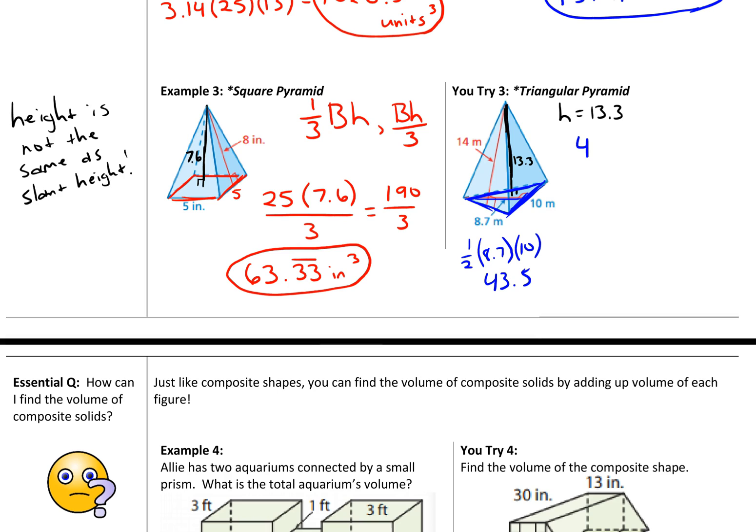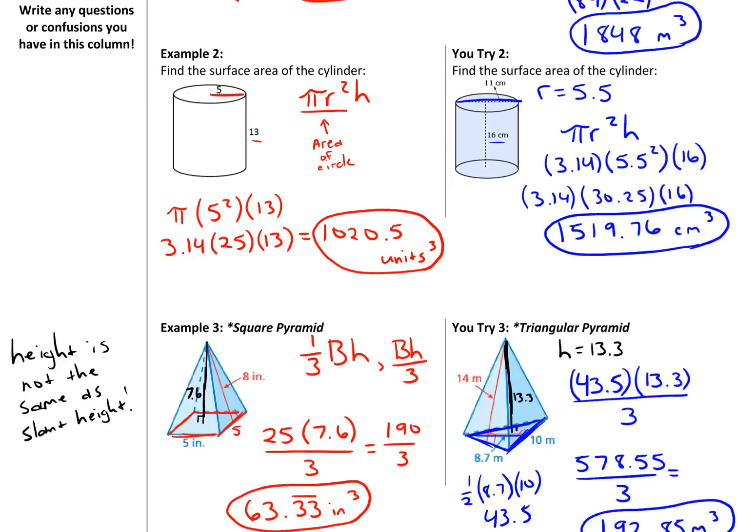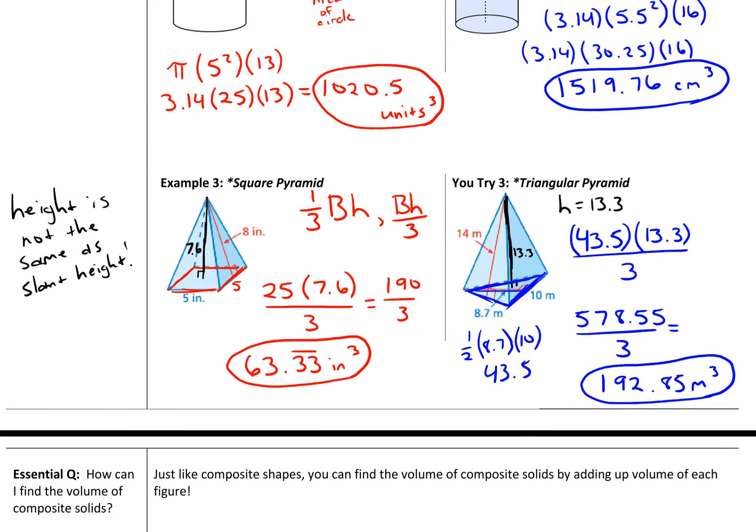So there's our base area, 43.5 times your height, 13.3. We're going to divide that by 3. 43.5 times 13.3 is 578.55. And if we divide that by 3, you get a final answer of 192.85 meters cubed. So the only difference between prisms and pyramids is that you divide by 3 on a pyramid.